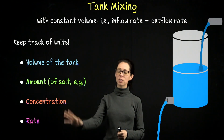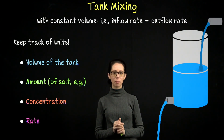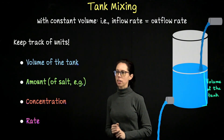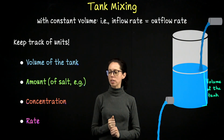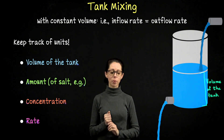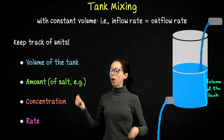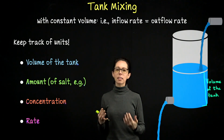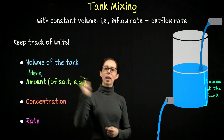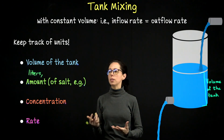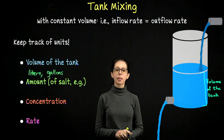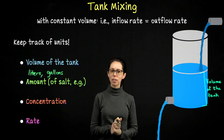It's really helpful to identify four key concepts whenever you start a new tank mixing problem. The first is: what is the volume of the tank? I recommend always keeping track of units. With volume, we'd look at liters in SI units — both examples today will be in liters, but you could also see gallons. So we might look at something like a 50-liter tank.